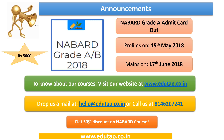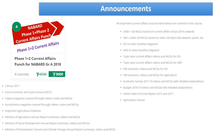EduTab is providing a comprehensive course for NABARD Grade A 2018, which you can buy at a discounted price of Rs. 5,000. We also provide a NABARD Phase 1 plus Phase 2 current affairs punch course — a consolidated course covering all current affairs relevant for this examination — available for Rs. 3,000.